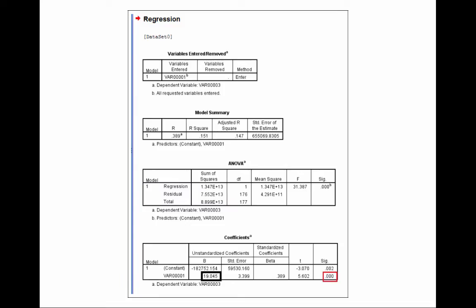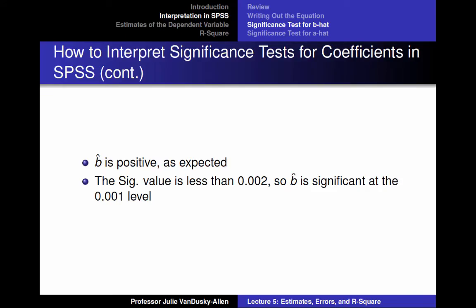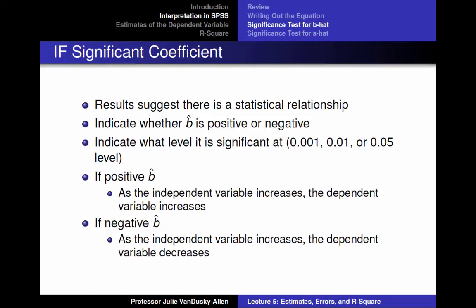Applying this to our example: I expected a positive relationship between GDP per capita and net migration. B-hat is positive as expected, and the SIG value is 0.000, which is less than .002, so the coefficient b-hat is significant at the .001 level. We would write: the results suggest a statistical relationship between GDP per capita and net migration. The coefficient for GDP per capita was positive and significant at the 0.001 level — as GDP per capita increases, net migration increases.